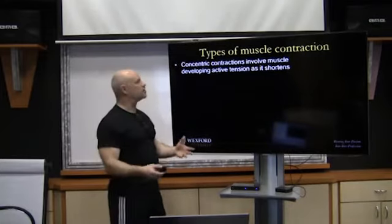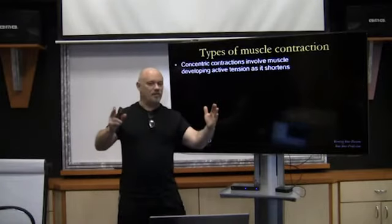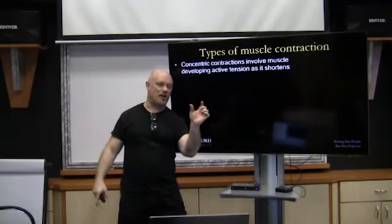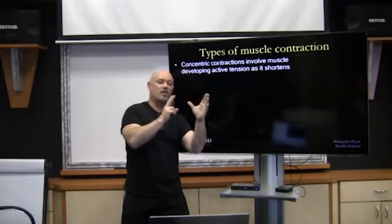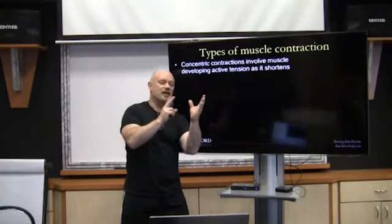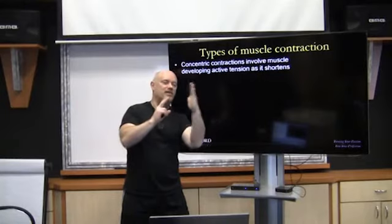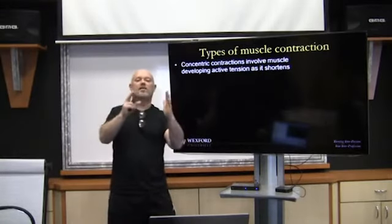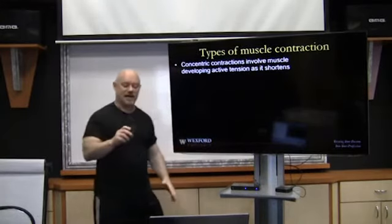Concentric contraction involves muscles developing active tension as it shortens. If we look at a whole muscle fiber, the basic functional unit is a sarcomere — from Z line to Z line. We have the actin and myosin filaments and the cross bridging. When the cross bridges from the myosin hit the actin fibers, they ratchet — like little levers that grab and pull, pulling the Z lines together. All those sarcomeres contract and shorten together, so the whole muscle fiber shortens. That's concentric.